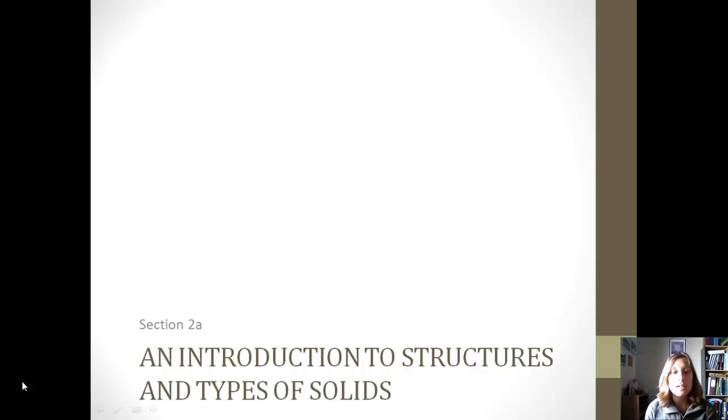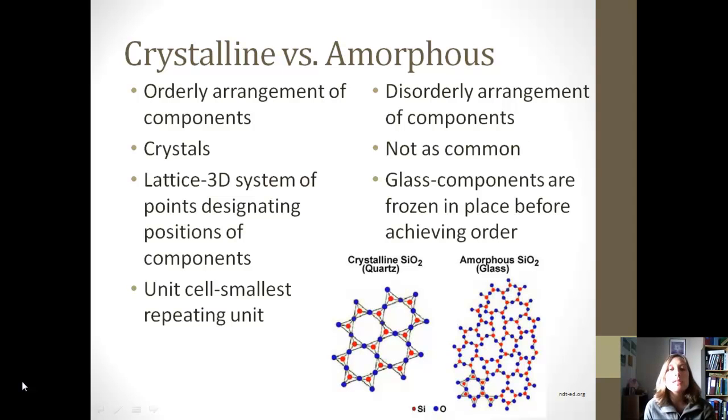Today we're going to continue our discussion of liquids and solids, and we're going to mainly talk about solids and the different types and how they are bonded. There are two main types of solids: crystalline or amorphous. Crystalline has an orderly arrangement of components. It's a crystal structure, and it has what's called a lattice. This is a 3D system of points designating the positions of the components. The other type, amorphous, has a disorderly arrangement, so it's not as structured. It's also not as common. Glass is an example of this. The components get frozen in place before they achieve order.